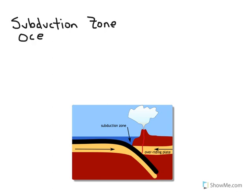You're going to have an oceanic plate which is thinner, as we saw when we looked at the layers of the earth, and a continental plate which is thicker.